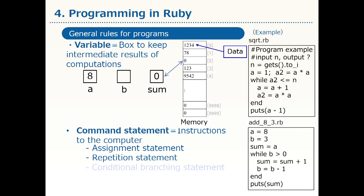The next component is a command statement. The instructions of the computer are written as commands in programs. Typical command statements are an assignment statement and a repetition statement. There are also things like a conditional branching statement, but first we will study typical ones, such as the assignment statement and the repetition statement.